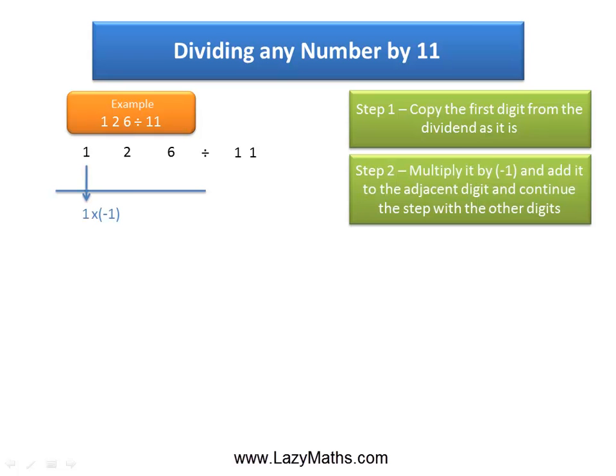Now, multiply the 1 by minus 1 and put the product right below the 2, which is the adjacent digit. 2 minus 1, we get 1 as the sum again.